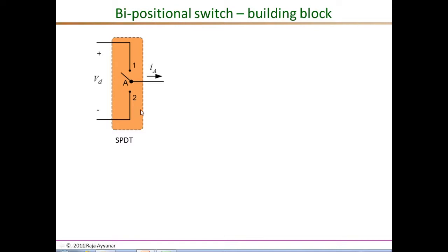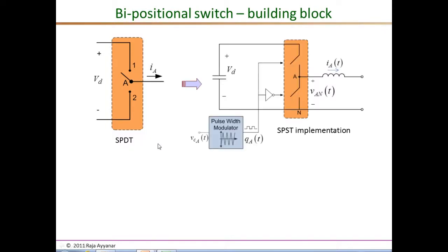In any switch mode converter we control any control objectives by controlling the switching pattern of one or more such bi-positional switches. In an electronic implementation we do not have a single device that can serve the purpose of an SPDT, so we realize an SPDT by two SPSTs. SPST stands for single pole single throw — these are essentially basic on-off switches.